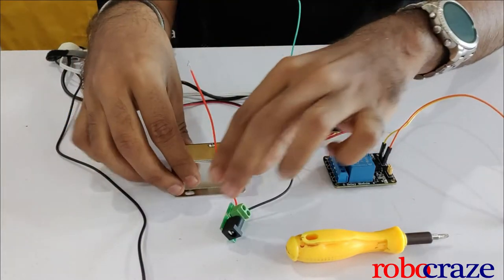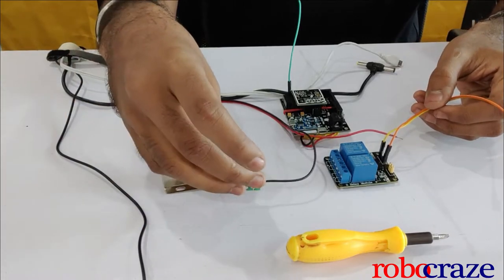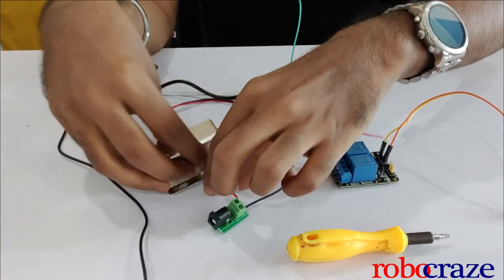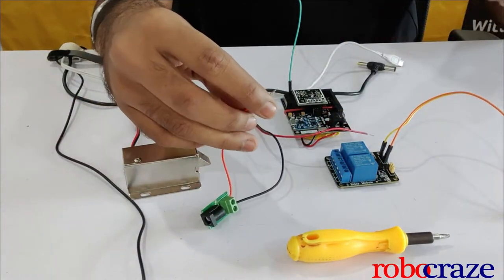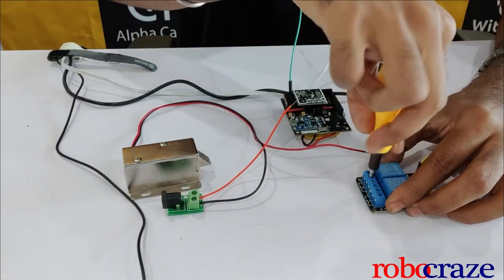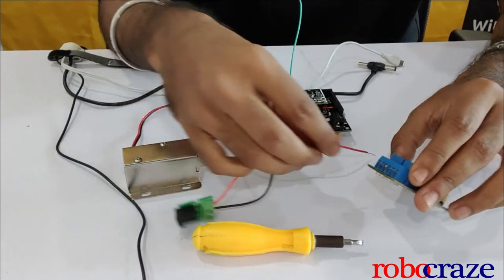Moving on to the solenoid lock, we have a DC jack breakout to which I have connected the negative terminal. With the positive terminal I am going to go ahead and connect it into the relay. I am using the middle port of the relay.